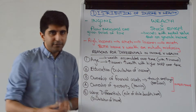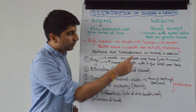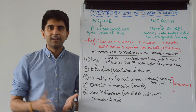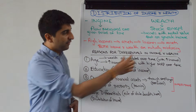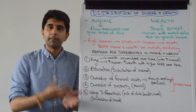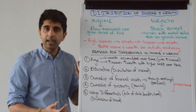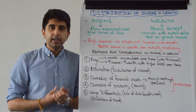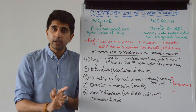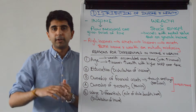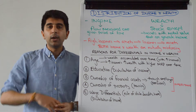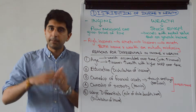Let's now understand different reasons for the differentials between income and wealth. One simple reason behind differentials and the unequal distributions we see in societies is simply age. The older somebody is, the greater their earning potential is — because they've got more skills, they're more productive, their experience is greater, and therefore they can demand higher wages, which means their wealth accumulation can be greater as well.